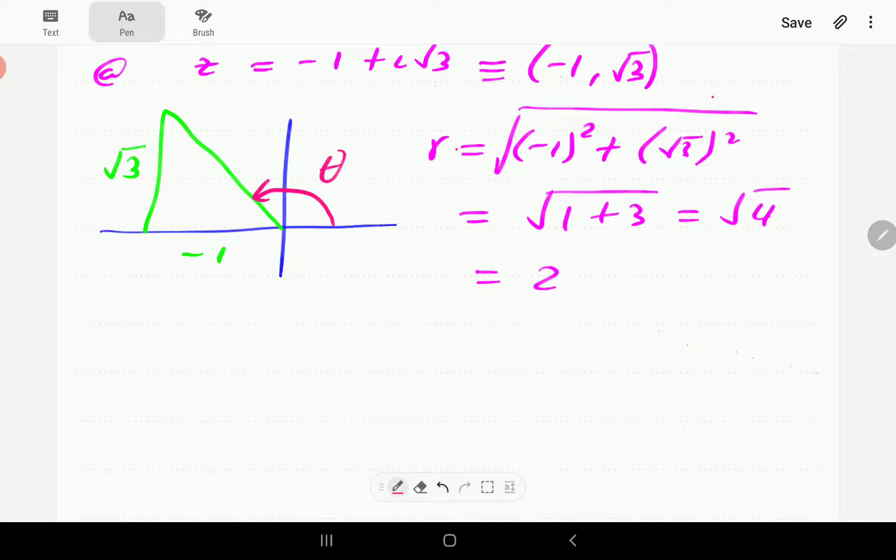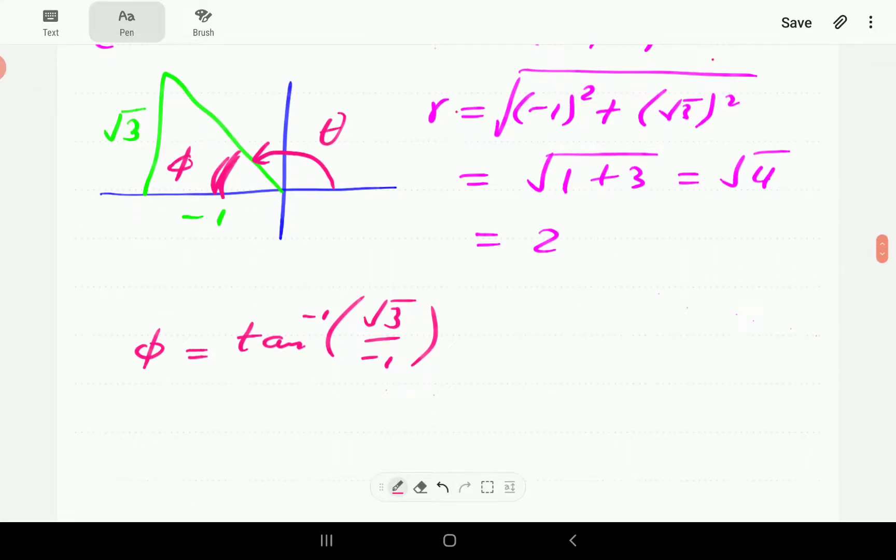Now, when we punch inverse tangent, I'm just going to call this one phi. When we punch inverse tangent of y over x, we always get that angle inside the triangle there. Sometimes that angle corresponds to the argument. Sometimes, like in this case, it doesn't. Because clearly you can see that theta is the angle outside that triangle.